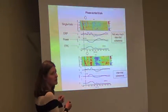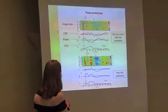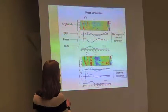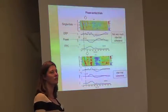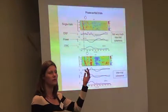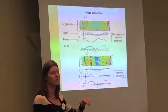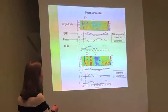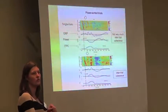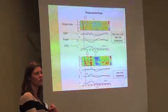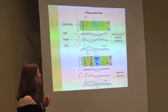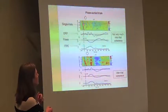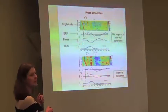So this is EEG data. The x-axis shows time; this is the onset of the stimulus. On the y-axis we have trial amplitude, colour coded so that increased amplitude is red and decreased amplitude is blue.